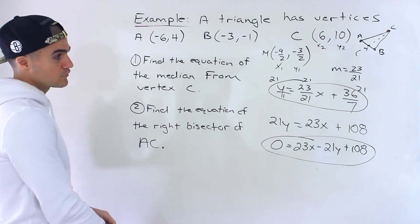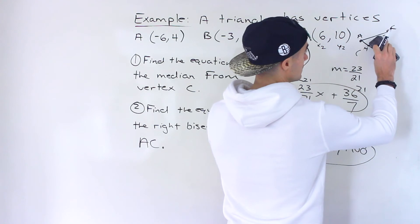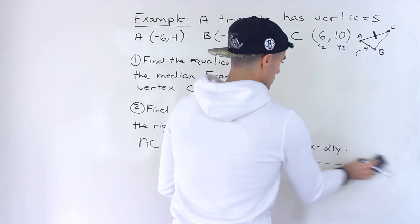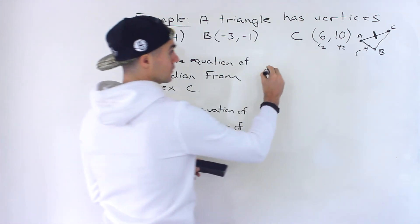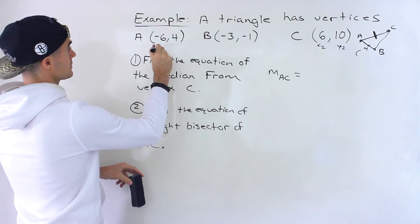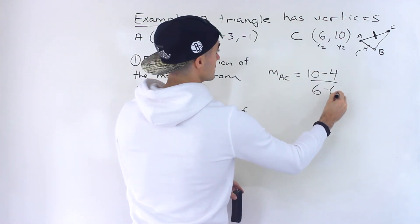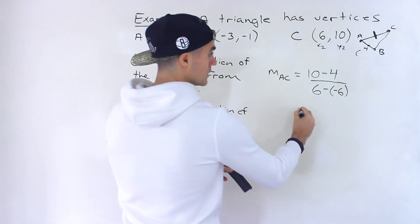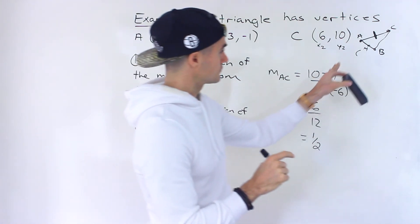Now, what about the right bisector of AC? We've gone through a video covering right bisectors and there are specific steps. The first step is to find the slope of AC: that's the slope between vertex A and vertex C. We can do 10 minus 4 over 6 minus negative 6, which is 6 over 12, giving us 1 over 2. So 1 over 2 is the slope of AC.